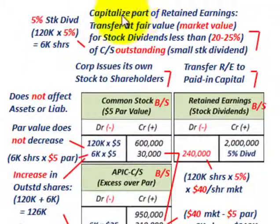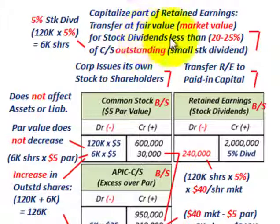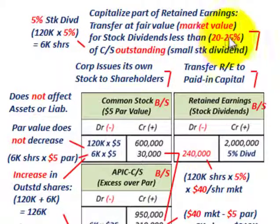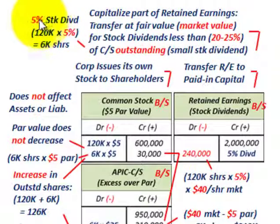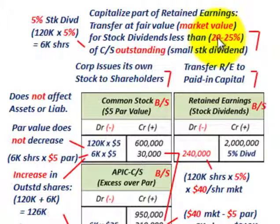We're going to be capitalizing part of the retained earnings by transferring at the fair value or market value of the common stock. This is a small stock dividend — less than 20% or 25% of common shares outstanding. Since our 5% dividend is less than the 25% threshold, it's considered a small dividend, and everything is based on the market value of the shares being issued to shareholders.